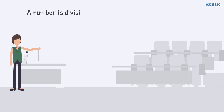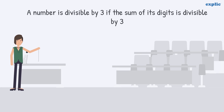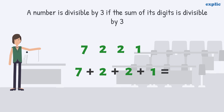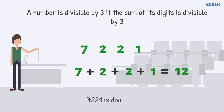A number is divisible by 3 if the sum of its digits is divisible by 3. For example, in number 7221, the sum of digits 7, 2, 2, and 1 is 12, which is divisible by 3. Hence, 7221 is divisible by 3.